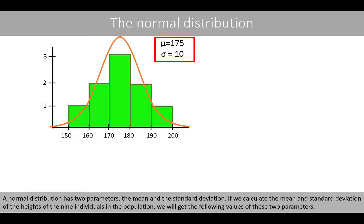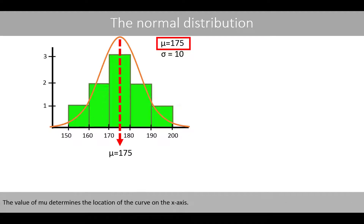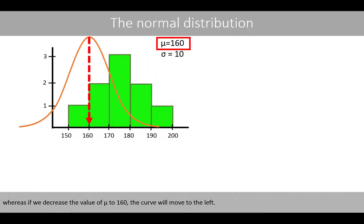If we calculate the mean and standard deviation of the heights of the nine individuals in the population, we get the following values. The parameter mu represents the mean of the normal distribution, which in this case is equal to 175. This means that the average body height is 175 centimeters. The value of mu determines the location of the curve on the x-axis. For example, if we increase mu to 190, the curve moves to the right and centers at 190, whereas if we decrease mu to 160, the curve moves to the left.